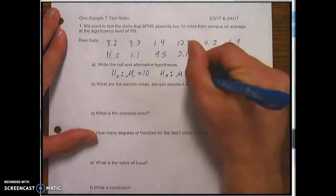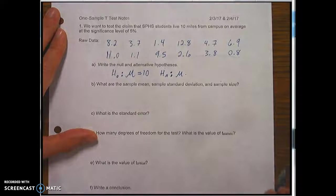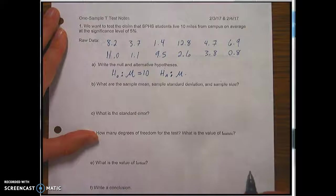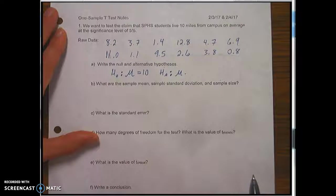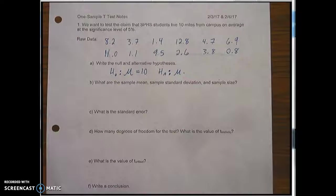Now the alternative is what we're trying to prove, that they live some other amount away from campus. So we'll just say looking at the data here most of these data points are less than 10 and so I'm looking at it I kind of suspect that maybe the alternative should be mu is less than 10.